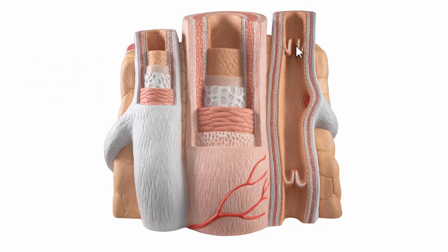If we look at where the vein has been cut open, you'll see these valves coming from the endothelium — they're made from endothelial tissue. These valves are incredibly thin; they look very thick in the model here but in reality they are tissue-paper thin.